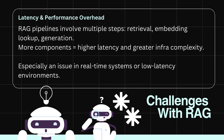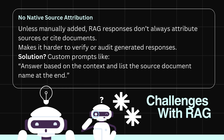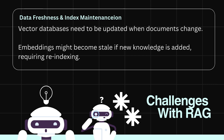Fourth, latency and performance overhead: RAG pipelines involve multiple steps — retrieval, embedding lookup, and generation — so more components means higher latency and greater infrastructure complexity, especially in real-time or low-latency environments. Fifth, there's no native source attribution: unless manually added, RAG responses don't always cite documents, making it harder to verify generated responses. A solution is to use custom prompts like: 'Answer based on the context and list the source document name at the end.'